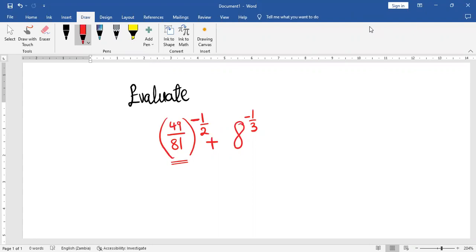having a reciprocal of the base here. So we are going to have 81 on top, then 49 below. And then once we've done that, we have to get rid of the negative, so we remain with this, and plus what happens this side.